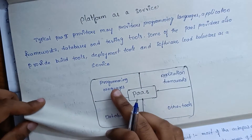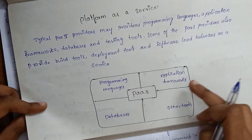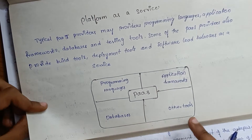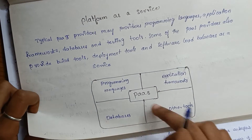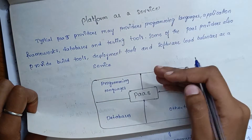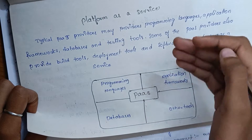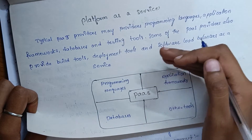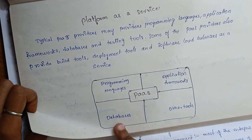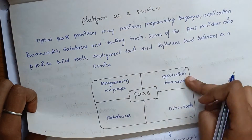So programming languages, application framework, database, and other tools — we can classify this. The platform as a service provides programming languages, database, application framework, and other tools.